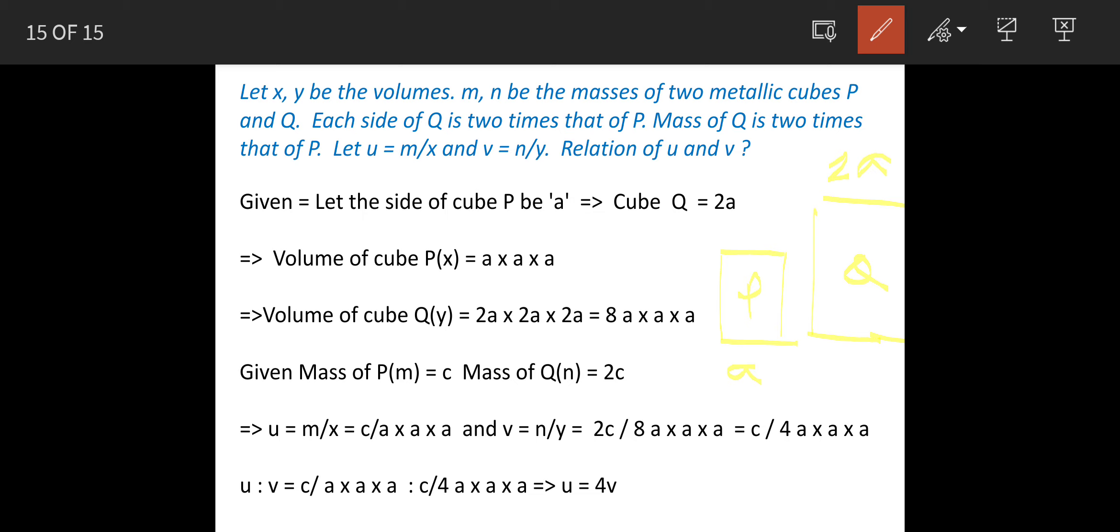So volume of cube P will be A into A into A. That means it is volume of basically a cube - three sides: length, width and height, so all three sides are taken for the volume.